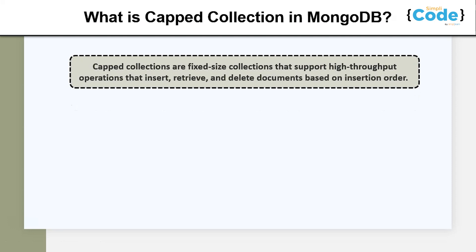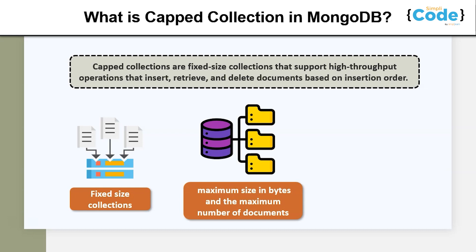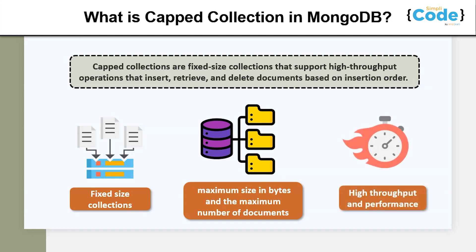So what is a capped collection in MongoDB? A capped collection is a special type of collection that has either a fixed number of documents or only a fixed number of elements in it. It basically creates new documents by overriding the oldest documents in the collection. Capped collections have a maximum size or document count that prevents them from going beyond a maximum threshold. All capped collections must specify a maximum size and may also specify a maximum document count. MongoDB removes older documents if a collection reaches this maximum size limit before it reaches the maximum document count.